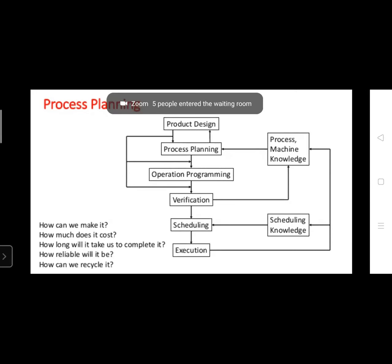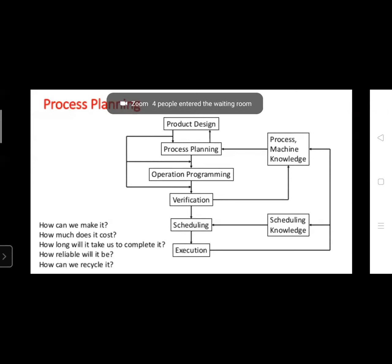After verification comes scheduling — how the product is to be scheduled towards the market. For example, if the company is in a rural area, how does the product move from one place to another? If it is glassware, how is it packed and carried? This is scheduling. After scheduling comes execution — you execute the product into the market.